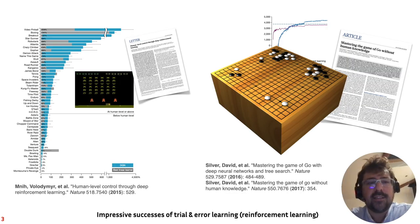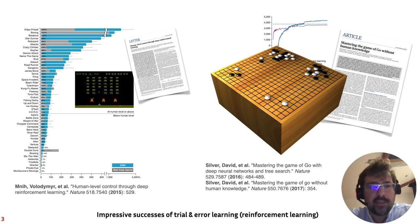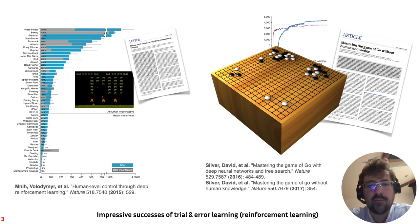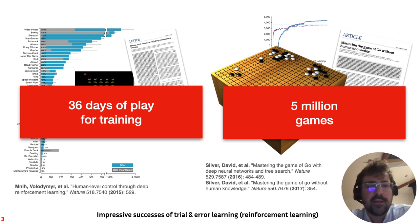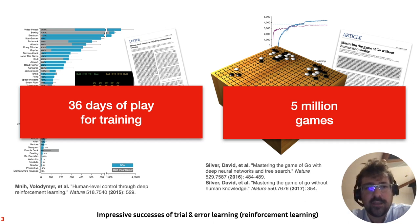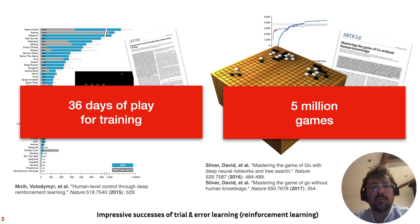Learning has seen a lot of successes in the last years. For instance, we can now learn to play Atari games from pixels, which is a very impressive achievement. We can also have algorithms that can beat the world champion at Go. But if we look at this in detail, we need a lot of training time. For the original Atari paper, it was about 36 days of play for training, which is much too much for a robot. For Go, it was about 5 million games. Essentially, we cannot afford these kinds of things on a robot, even a few days.